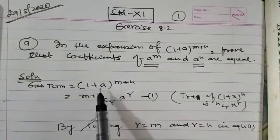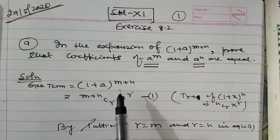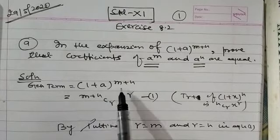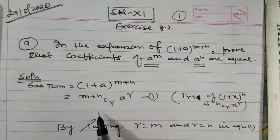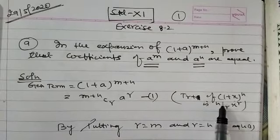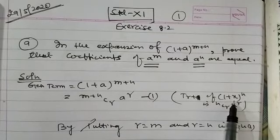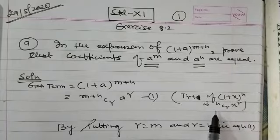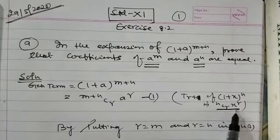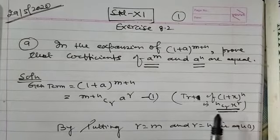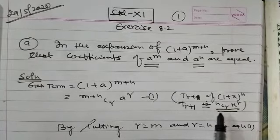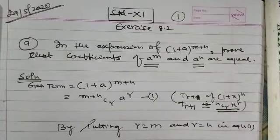The general term in the expansion of (1 + a) to the power (m + n): the general formula for the general term in the expansion of (1 + x) to the power n is T(r+1) = nCr · x to the power r.